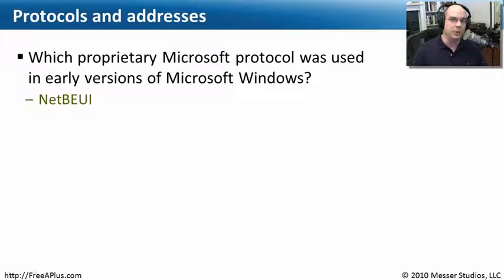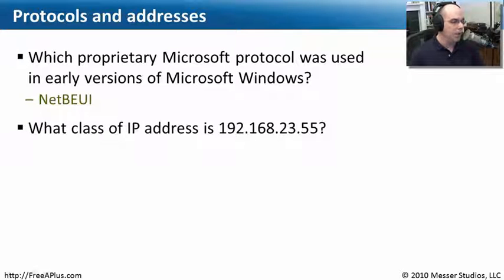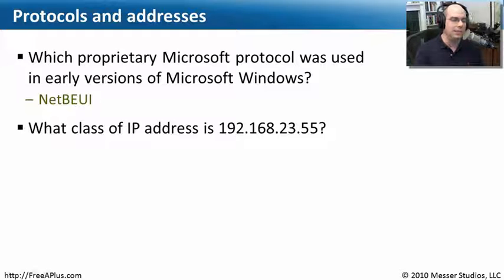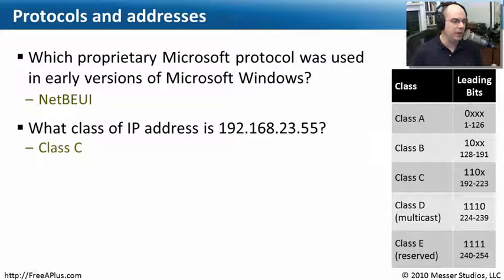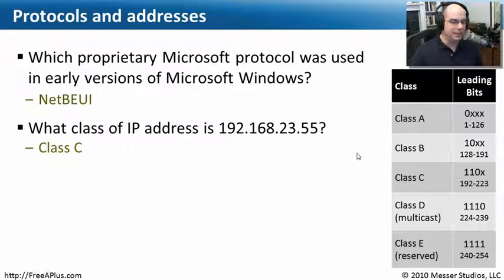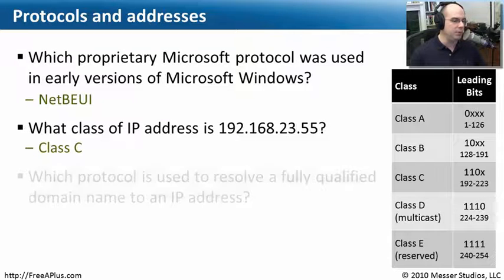Back then, it was NetBEUI that did everything for us. Next question: what class of IP addresses is 192.168.23.55? Looking at our class list, if it starts with 192, it must be a class C. If you remember, anything between 192 and 223 is a class C network — a nice piece of information to memorize and put away for your exam.